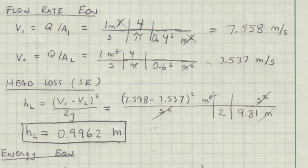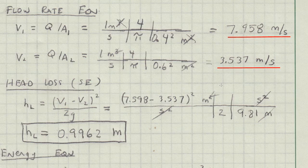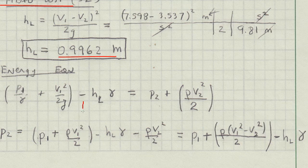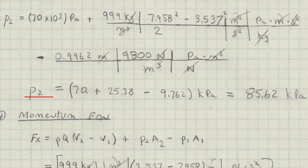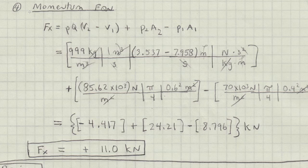The velocities are V1 equals 7.96 meters per second, V2 is 3.54 meters per second. The head loss is 0.996 meters.